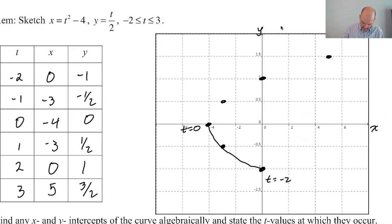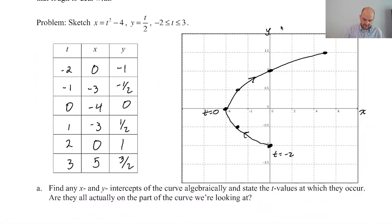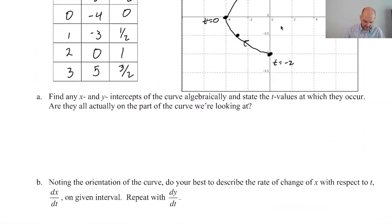All right, here we go. So this is a parabola on its side. I don't know if it's going to ask us to, but we could definitely eliminate the parameter. So let's see what we're asking. Find any x and y intercepts of the curve algebraically state the t values which they occur.